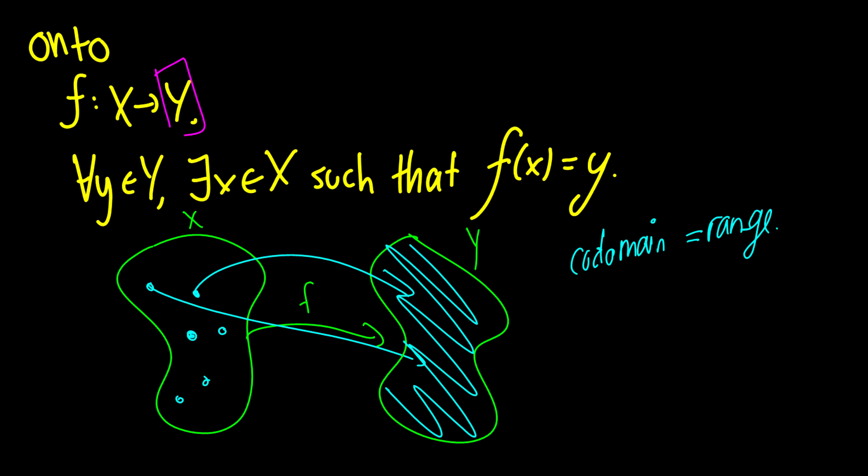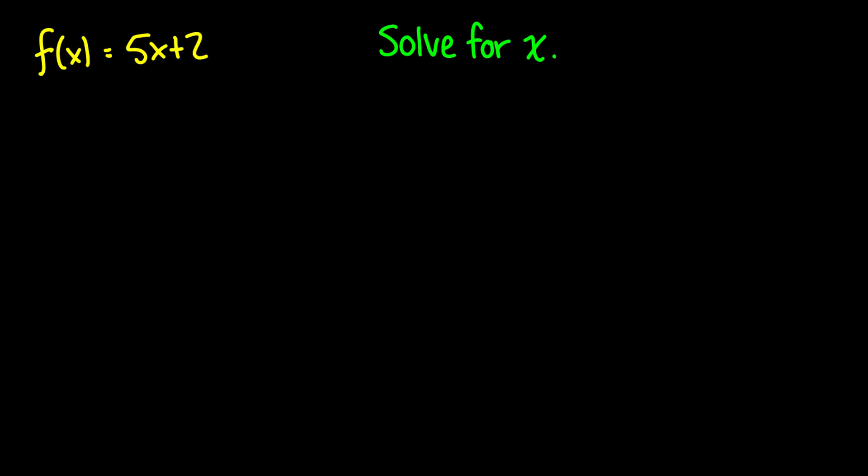This can be a little bit difficult to prove. How do I prove this? Let's go right into an example. We have f(x) equals 5x plus 2. I'm going to rewrite this as y equals 5x plus 2, and basically, what we do is we solve for x. We have y minus 2 equals 5x, so y minus 2 over 5 equals x.